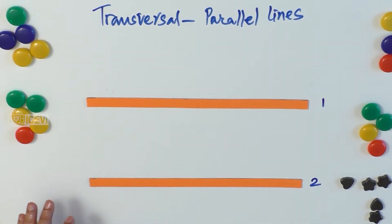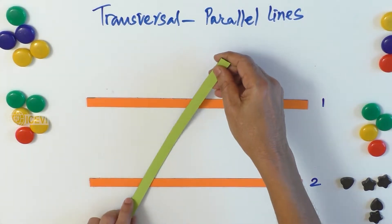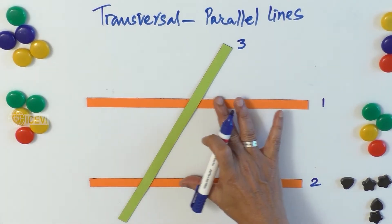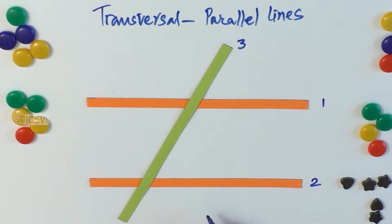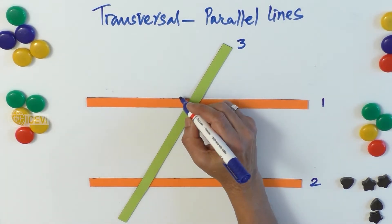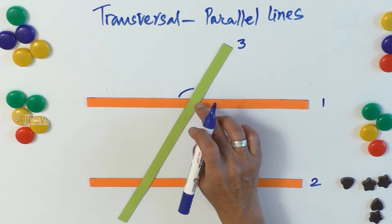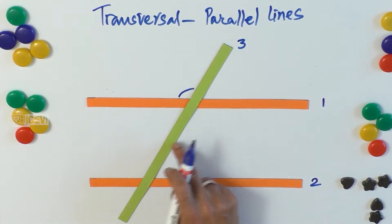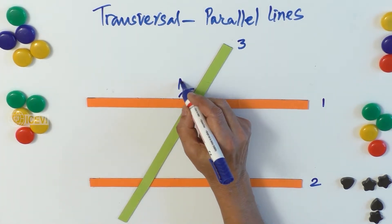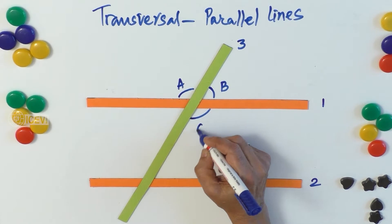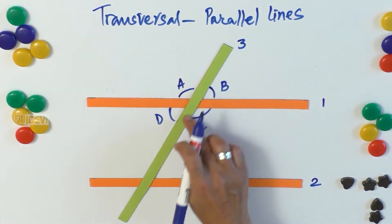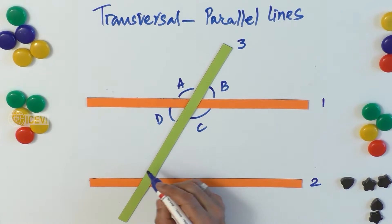Let us call these two lines as line one and line two — they are parallel lines. Now let us have a transversal, line three, going through lines one and two. Using lines that are not parallel, we define different types of angles. Taking the transversal three and line one, we get four angles: a, b, c, and d.